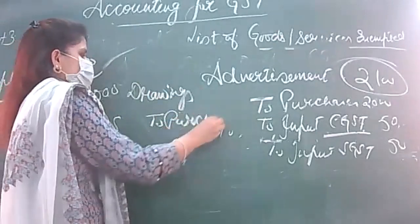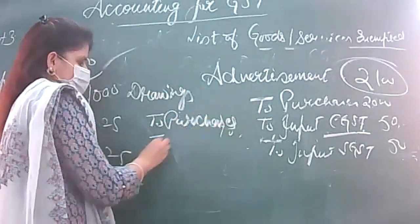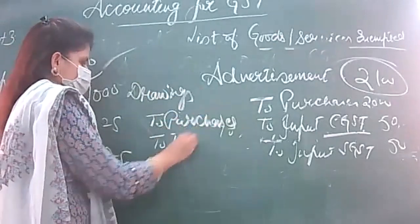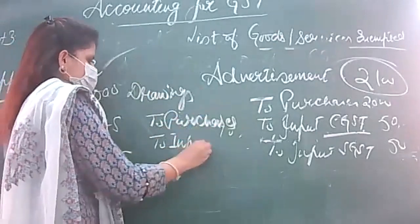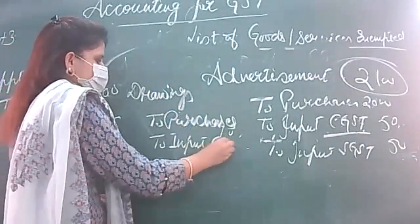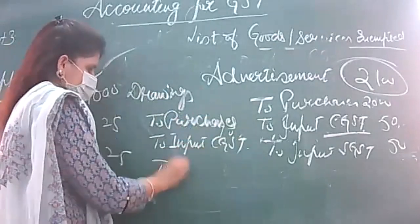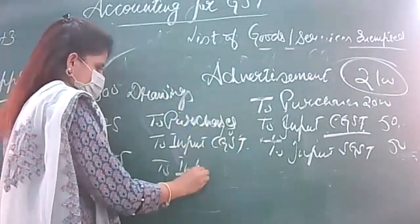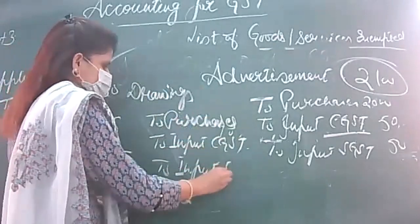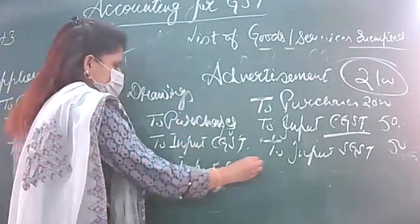The entry is: debit to purchases, to input CGST, to input SGST. Any doubt to anyone?